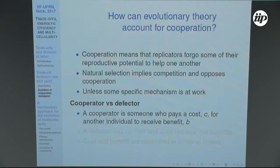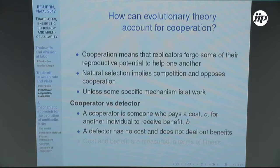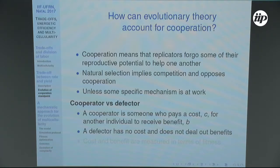A cooperator pays a cost and brings some advantage to other individuals; a defector pays no cost but can take advantage of cooperators. The efficient mode of metabolism can be seen as the cooperator, while the inefficient mode is the defector — because defectors can deplete the environment, and if only defectors survive there is a high chance of resource depression, which can lead to extinction of the whole population.